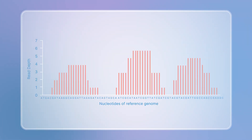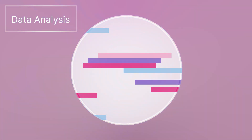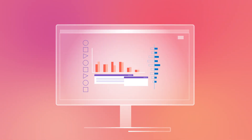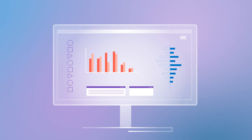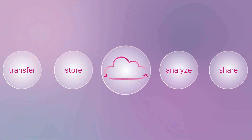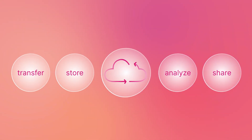Read depth varies depending on the goals of the RNAseq study. The third and final step of the workflow is data analysis. RNAseq data can be quickly and securely transferred, stored, and analyzed in Illumina Connected Analytics or BaseSpace Sequence Hub, Illumina's multiomics cloud computing platforms.